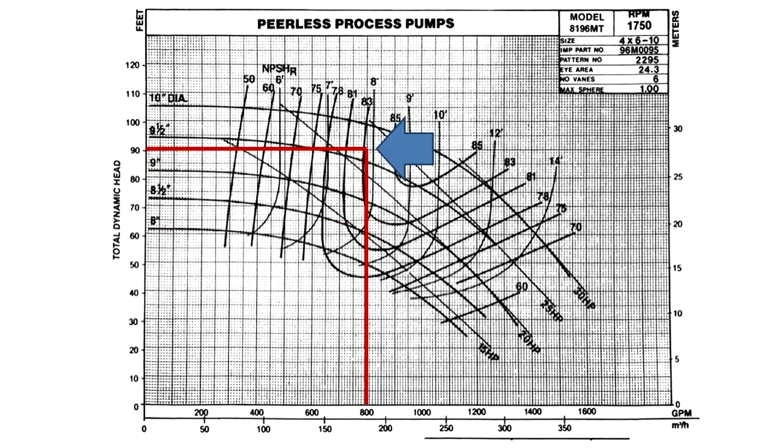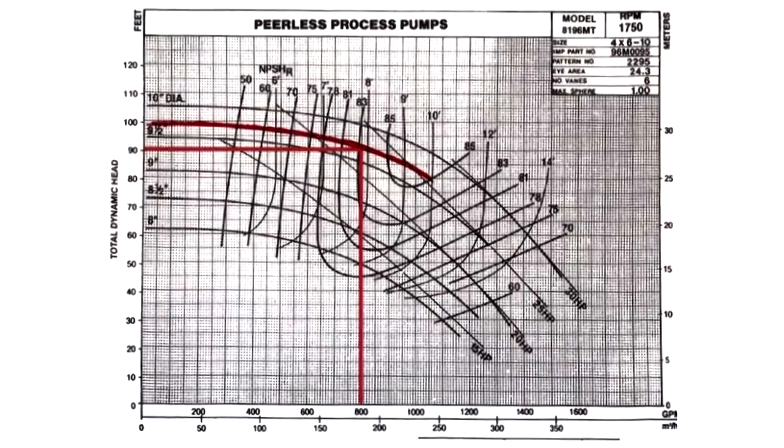If you were selecting a pump of this size, your process conditions were 800 GPM at 90 foot, the impeller diameter would be somewhere between 9.5 and 10 inches. But the manufacturer would determine the proper impeller diameter for your conditions and cut it to the correct diameter.